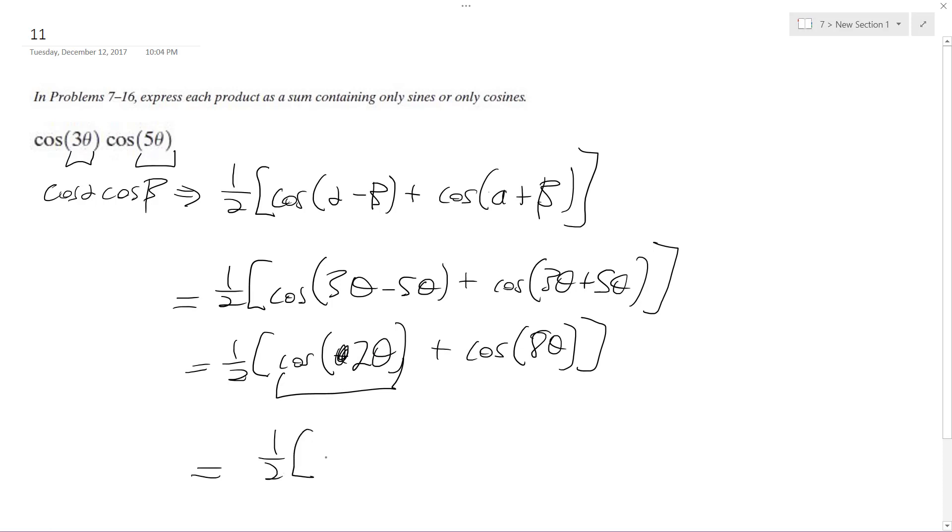Ultimately what we end up with is one-half times cosine of 2 theta plus cosine of 8 theta. That's it.